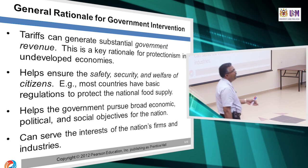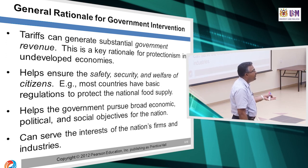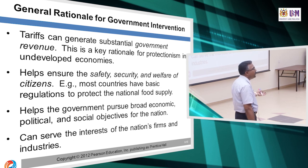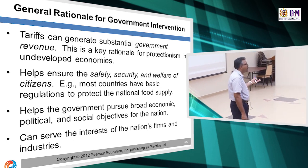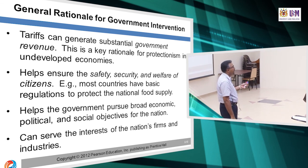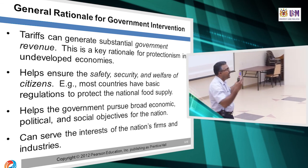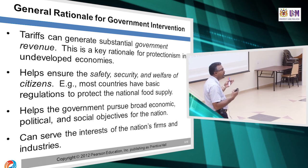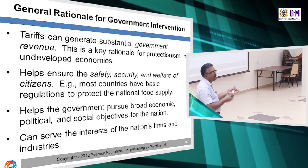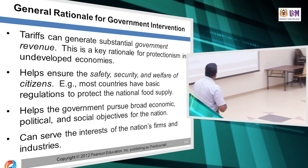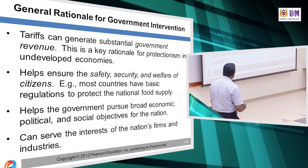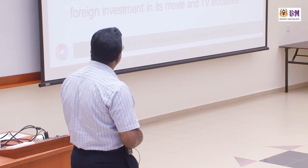Government intervention helps pursue broad economic, political and social objectives for the nation. For example, if you support the local car industry, what happens? More employment, more job opportunities for locals, more tax revenue from employees working in local companies, and the income and quality of life of citizens increases. It can also serve the interests of the nation's firms and industries — we want to protect local firms' interests for the long term.